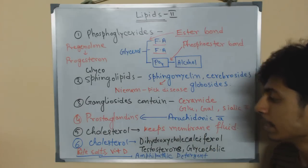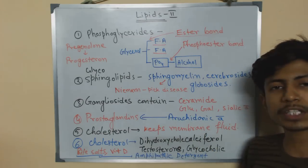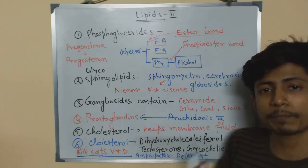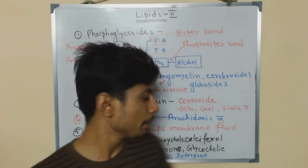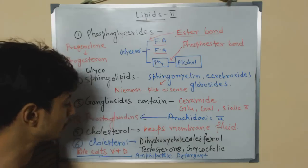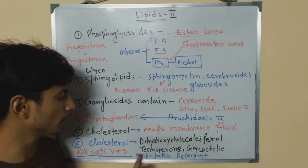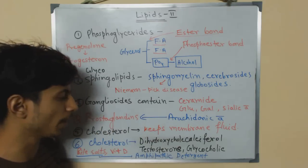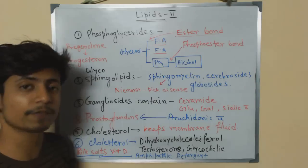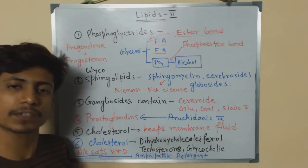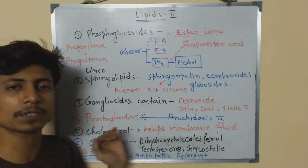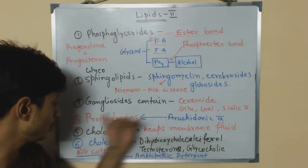Cholesterol is one of the most important components of our body. It is a very important ingredient of the cell membrane because it maintains membrane fluidity, which is critical. Cholesterol produces many different types of lipids and fats in the body, for example dihydroxycholecalciferol, calciferol (Vitamin D), testosterone, and glycocholic acid — these are all produced from cholesterol as a precursor molecule.